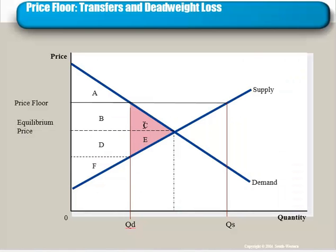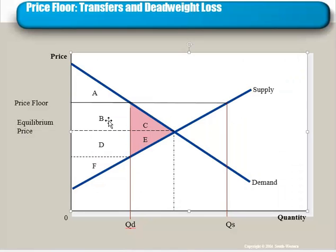This is our deadweight loss triangle. C and E are lost from consumer surplus and producer surplus respectively, and no one gains them. This is in contrast to B, which used to be part of consumer surplus and has been transferred into producer surplus. So B is essentially the redistribution, and C and E are the inefficiency caused by the redistribution.